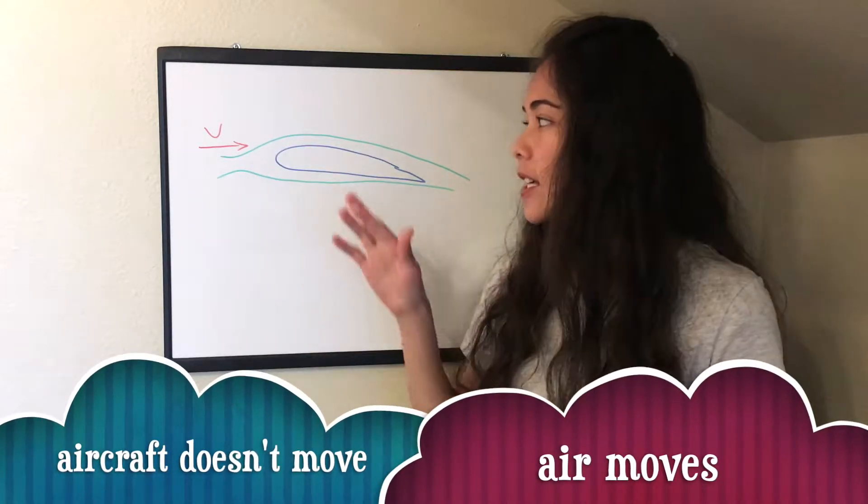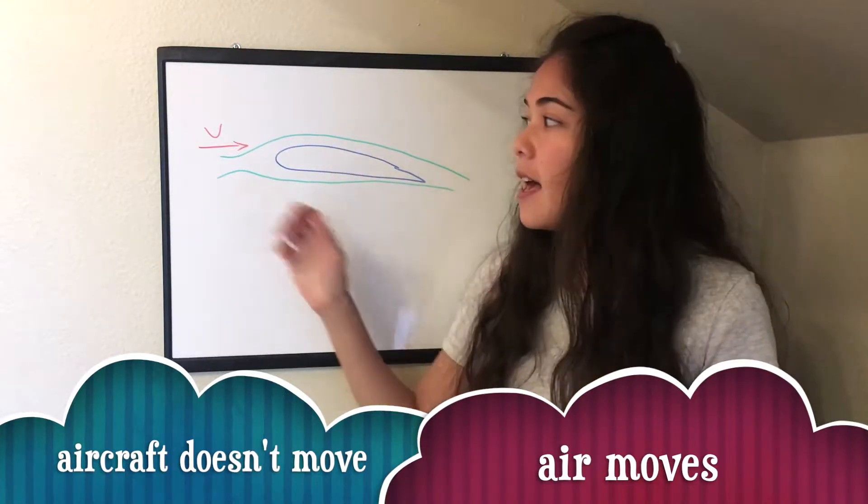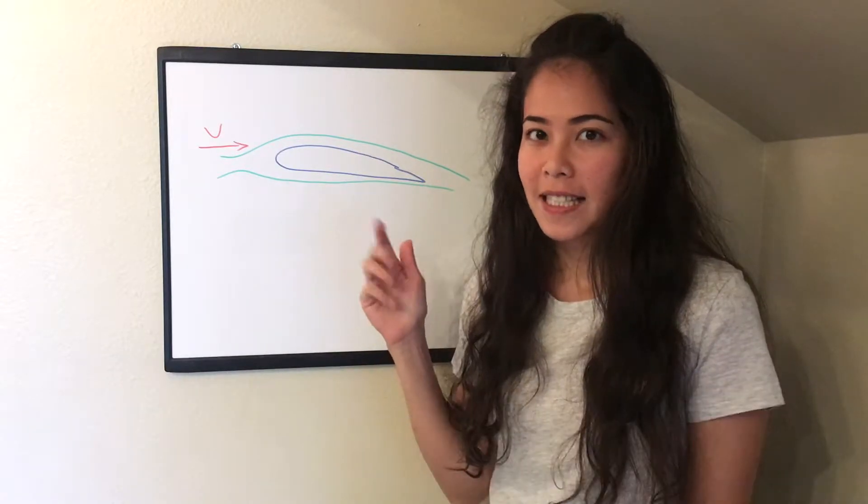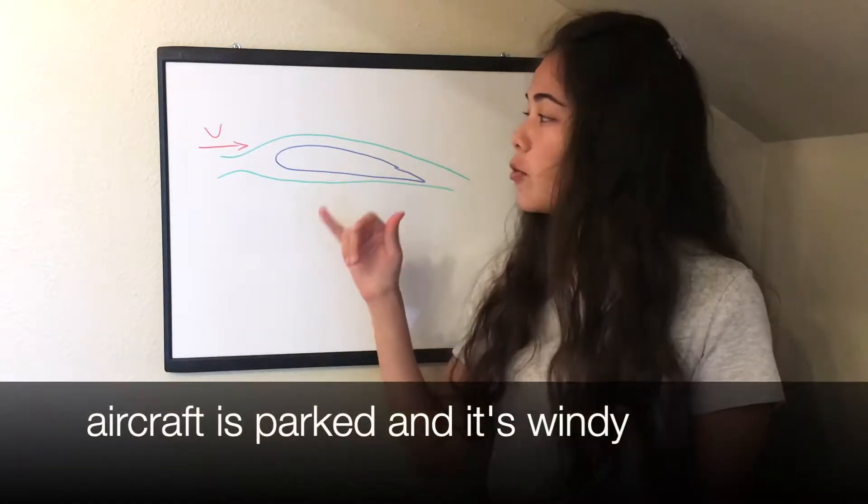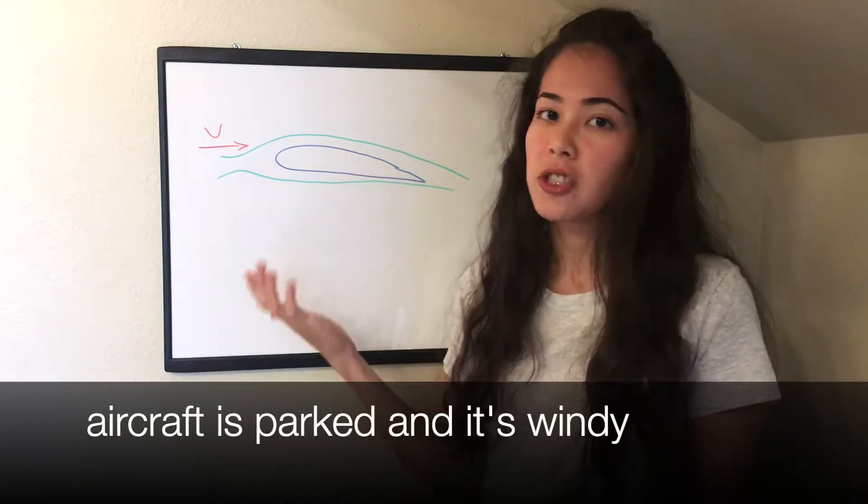The first way is to think that the airfoil or the aircraft is stationary and the air is flowing at it. So can you think of a situation when this happens? This could happen when the aircraft is in the hangar and there's strong wind.